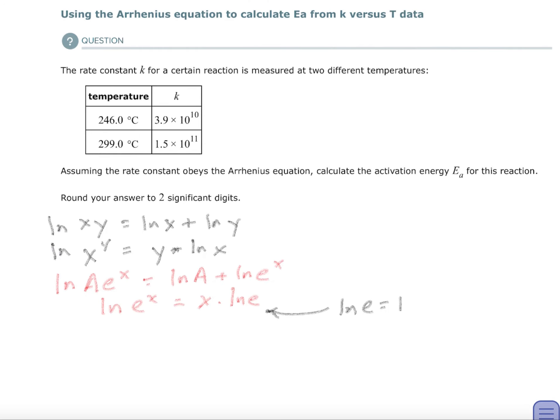So if one of the terms of your product is actually e, then I just rewrote it. The natural log of A plus the natural log of e to the x. Well, the natural log of e to the x equals x times the natural log of e. And the natural log of e is one. That's a definition. So that can go away.